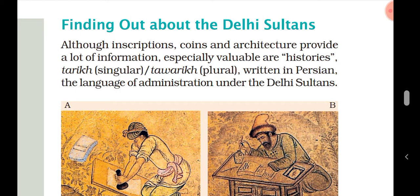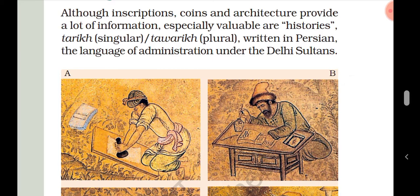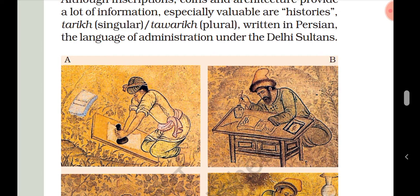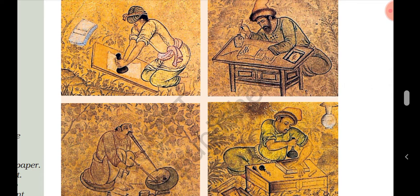Those people who wrote important accounts of events and important topics of a place were known as Tarikh or Twarik writers. Just as today some people write news and news channels broadcast news to us, at that time — when social media had not been invented — some people used to write history. This history was written in Persian, the language of administration under the Delhi Sultanate.